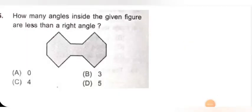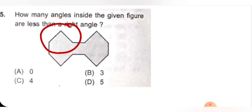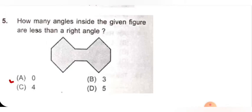Next question: how many angles inside the given figure are less than a right angle? Options are 0, 4, 3, 5. Observing the figure — this angle is greater than, this angle is greater than, this one will be greater than. This portion is exactly 90 degree, this is exactly 90 degree. So inside the figure, none are less than 90 degree. The answer is 0, option A is correct.